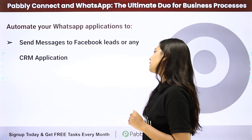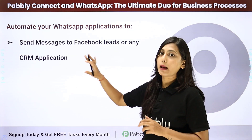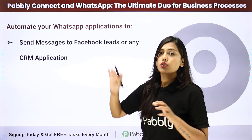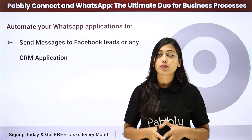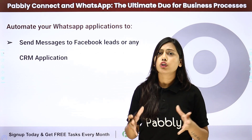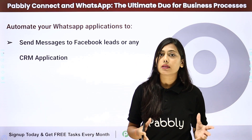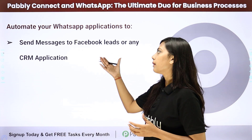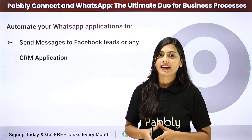The next automation is to send messages to Facebook leads or any other CRM applications. If you are using Facebook Lead Ads to get leads or any other CRM application and want to share your product brochure or program details, you can simply integrate them with any WhatsApp application like Cloud API or WhatsApp Business and share the details of your company with the customers.